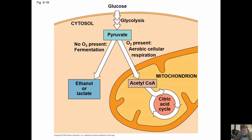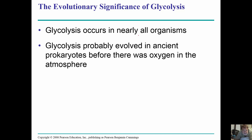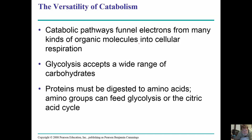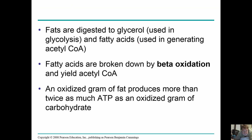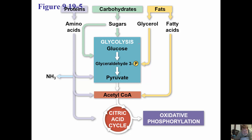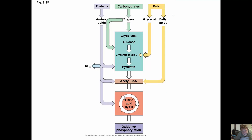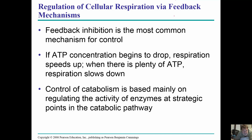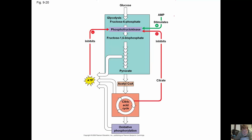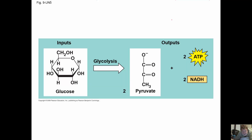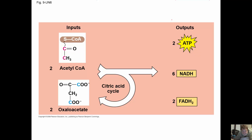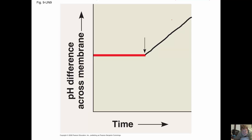Glycolysis occurs in nearly all organisms and probably evolved in ancient prokaryotes. Glycolysis can use a wide range of carbohydrates. Proteins, carbohydrates, and fats can all move their carbon backbones into the primary metabolic pathways. There is also feedback inhibition on this system, and you need to know the inputs and outputs.